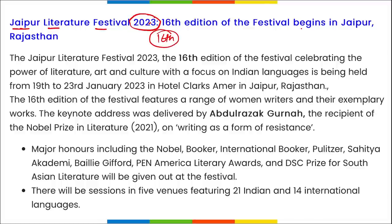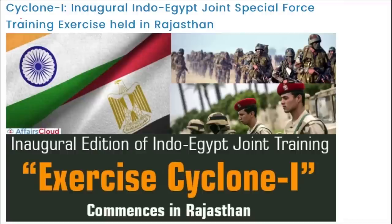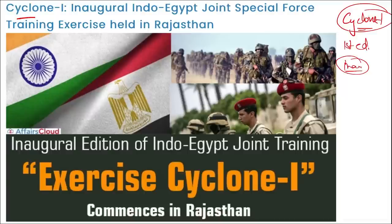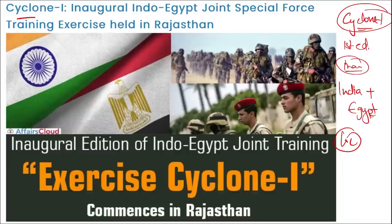The Jaipur Literature Festival 2023 was the 16th edition of this festival, beginning in Jaipur, Rajasthan. Next, Cyclone-1 is the inaugural edition of a joint exercise held between India and Egypt. This exercise was held in Rajasthan.